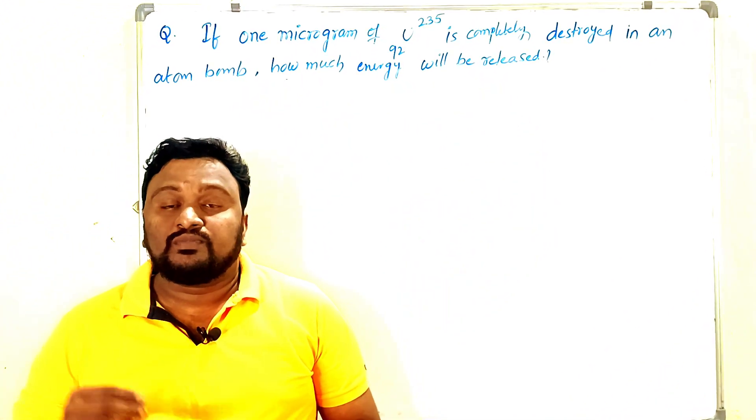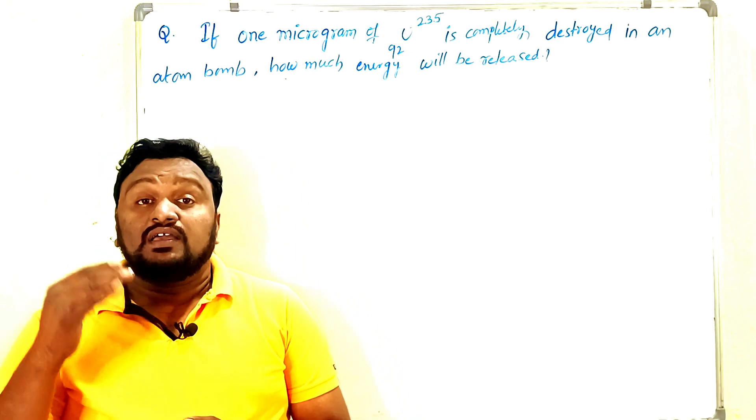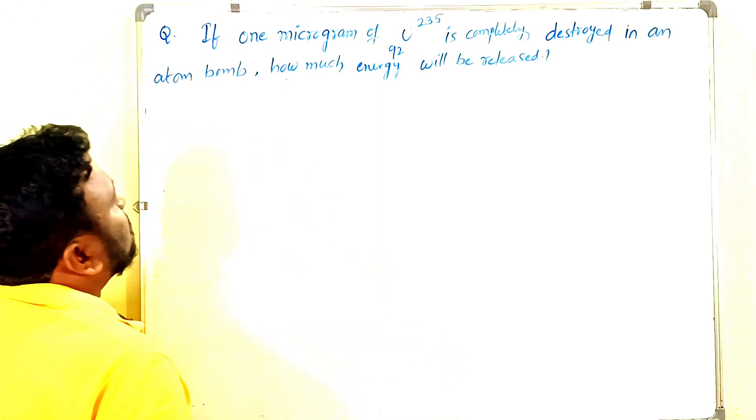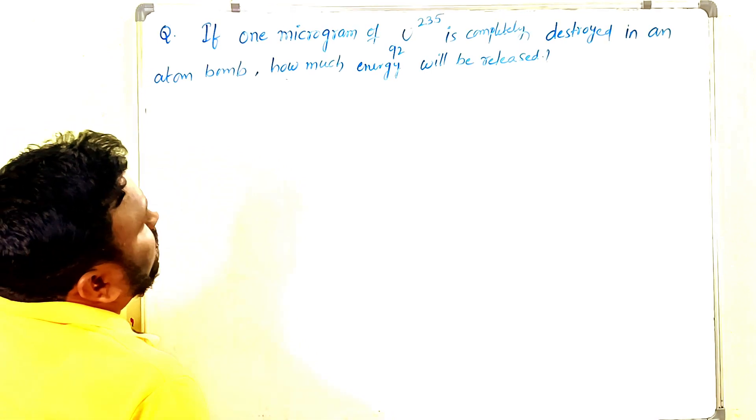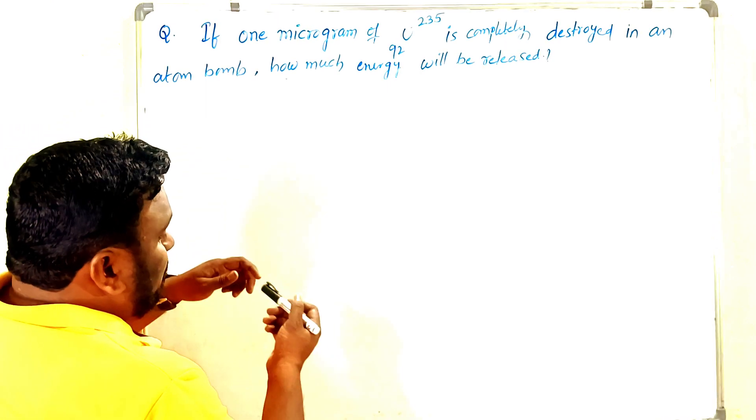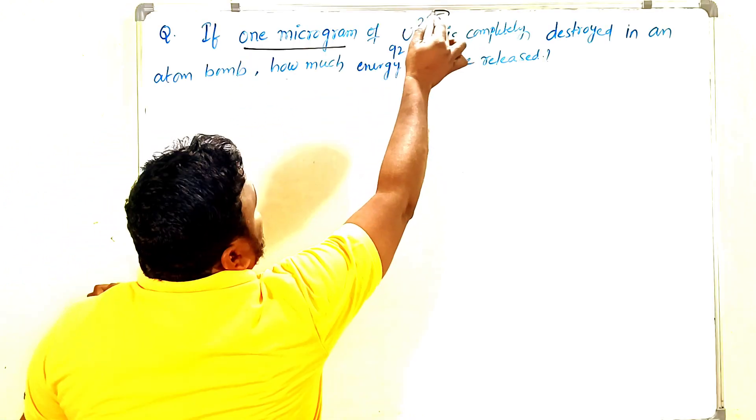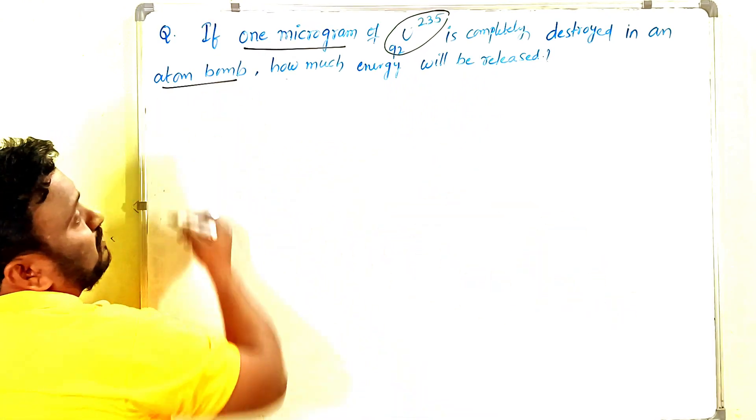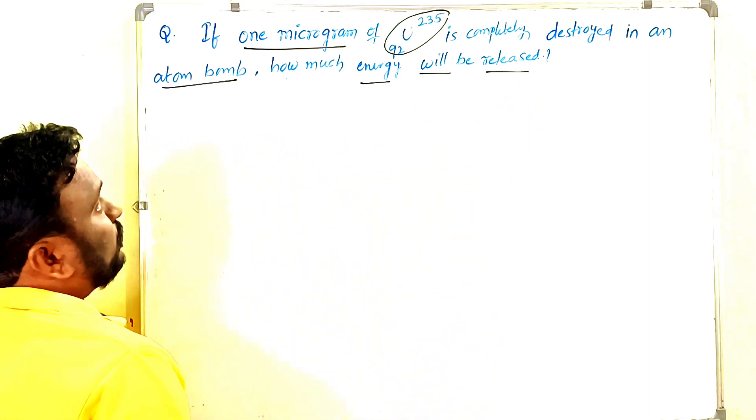Dear friends, this is a problem related to the long answer question from the nuclear chapter. Very easy one, we will get two marks very easily. See here the question: If one microgram of uranium-92-235 is completely destroyed in an atom bomb, how much energy will be released?